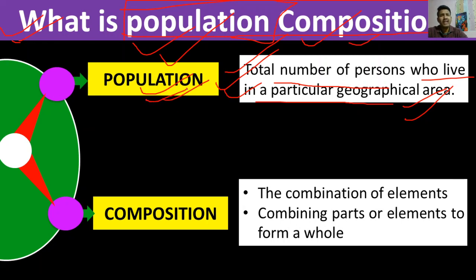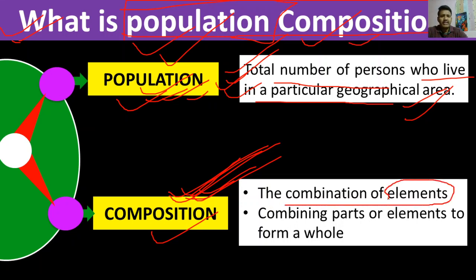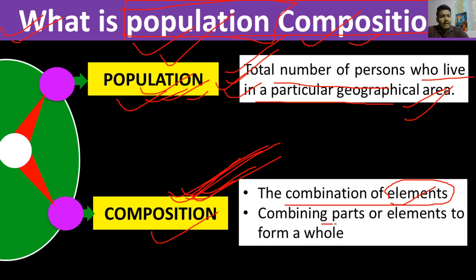We can talk about population of animal species or tree species, but here we are talking in the context of people. The total number of people living in a particular area is the population. Now, the word 'composition' — think of it like chemistry — it refers to the combination of elements, combining parts or elements to form a whole, or small parts forming a big entity.